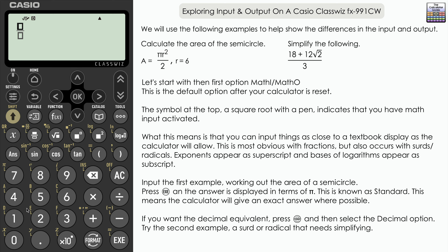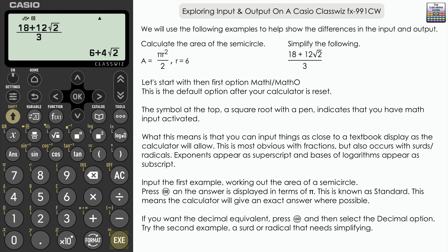Let's explore a second example — a fraction with a radical. 18 plus 12 square root 2 over 3. Press execute, and the calculator has simplified that for us: 6 plus 4 square root 2. Again it's given us an exact answer — a standard answer — because we had math output selected from the input output menu.